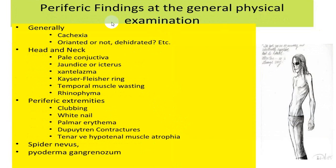As far as physical examination relating to the abdomen, look for cachexia, dehydration, and orientation — because a person can be disoriented in hepatic coma or uremia. Starting from head to toe: conjunctiva — look for pallor and jaundice. Close to the upper eyelid look for xanthelasma. At the cornea, look for KF ring (Kayser-Fleischer ring). Temporal muscle wasting, rhinophyma. In upper extremity, look for clubbing, white nails (common in liver disorders), palmar erythema, Dupuytren's contractures, wasting of muscles, spider nevi close to the clavicle, and pyoderma gangrenosum.